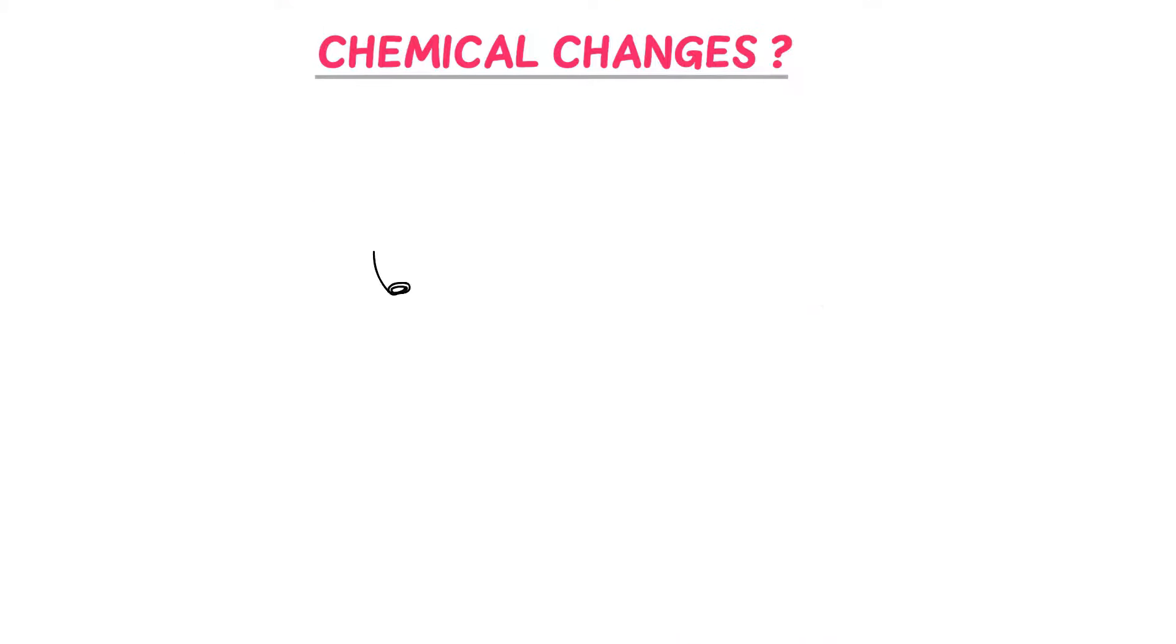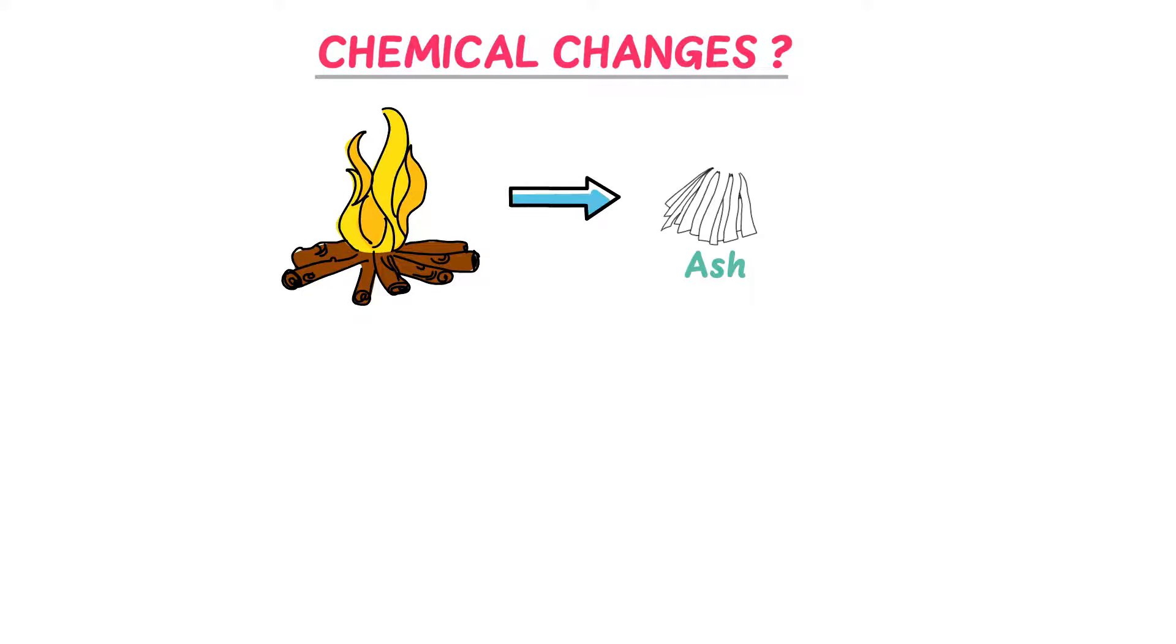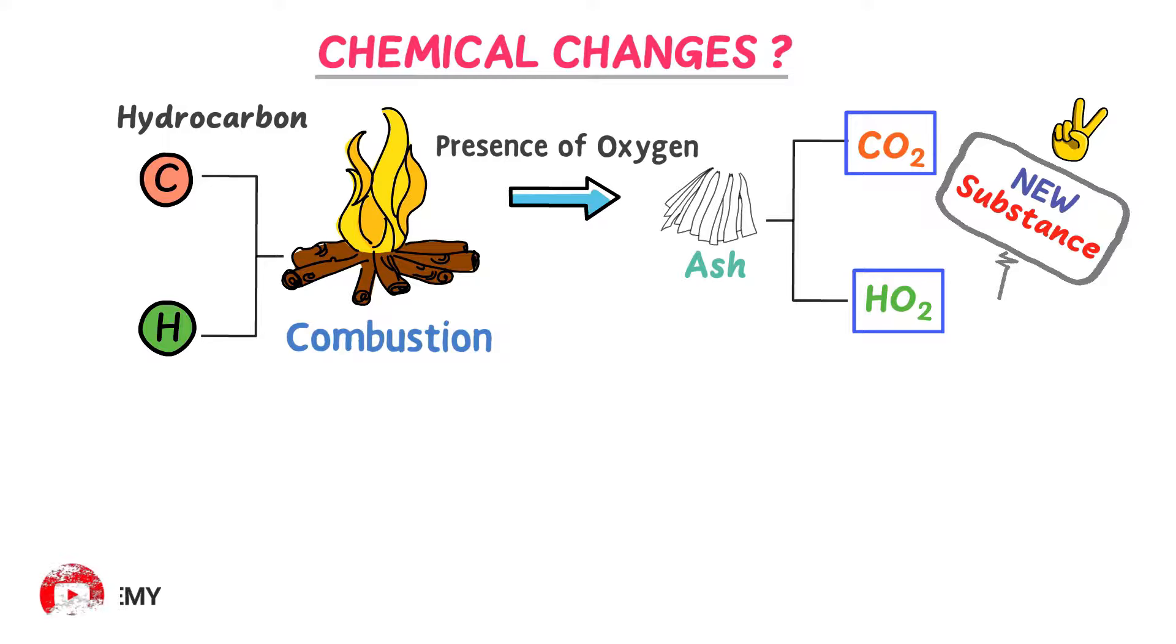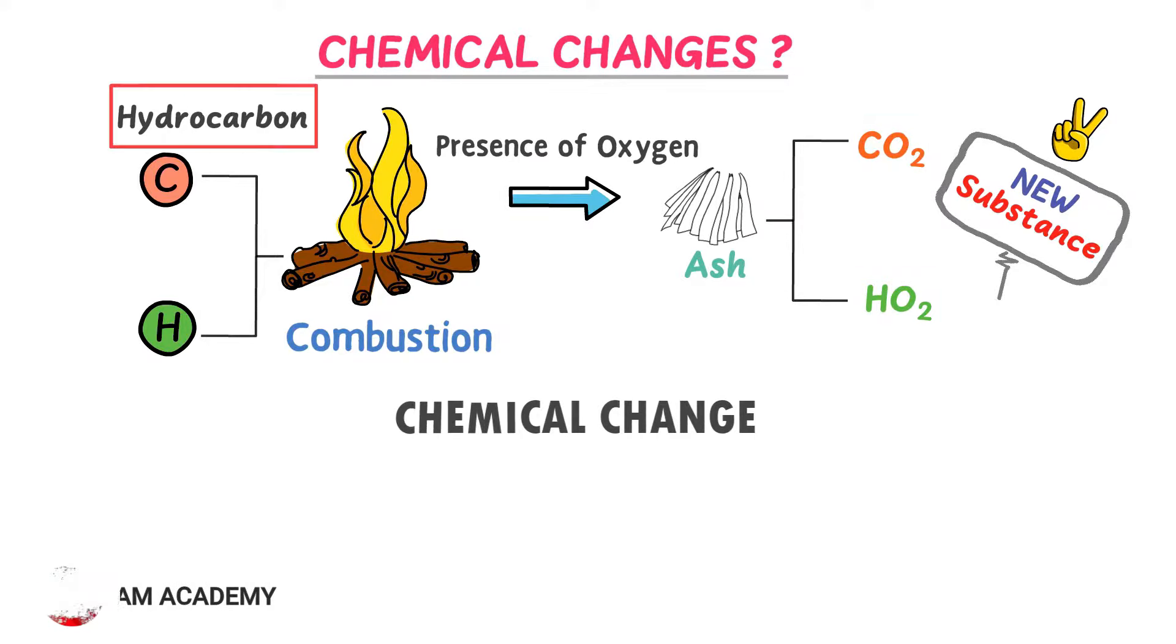Now what is chemical changes? Well, consider the burning of wood. We know that when we burn wood, we get ash. In chemistry, we know that wood is organic material and it is mainly made out of carbon and hydrogens. That is why it is also known as a hydrocarbon. Burning organic material is known as combustion. When we burn wood in the presence of oxygen, we get carbon dioxide and water. Thus burning of wood results in the formation of new substances like carbon dioxide and water. We call this change as chemical change, because hydrocarbon is converted into carbon dioxide and water.